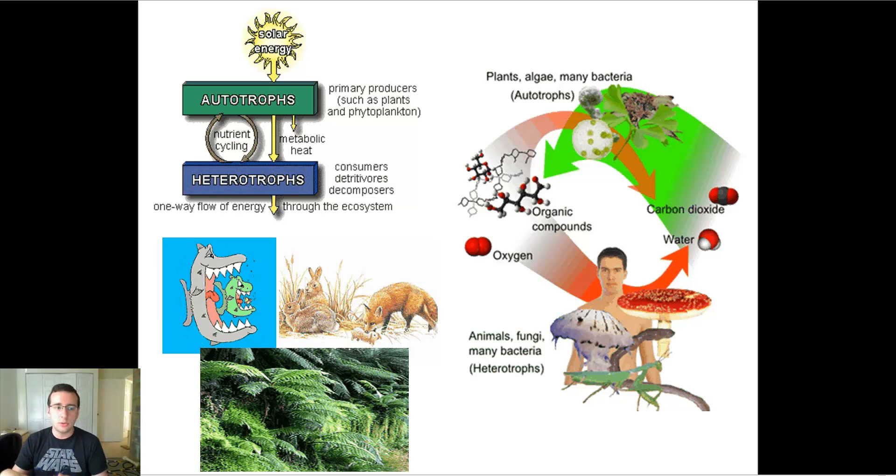So these consumers include things like carnivores, herbivores, detrivores, decomposers, anything in the ecosystem that must consume something else in order to gain materials and energy to survive. So what they would do is that they would eat the organic compounds that were created by the autotrophs and also consume the oxygen in the process to actually make carbon dioxide.